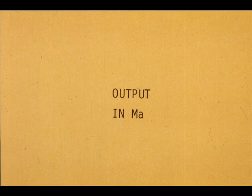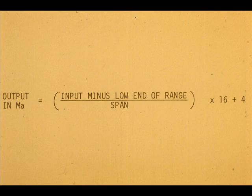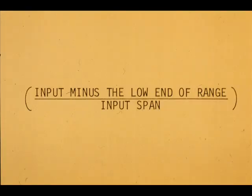For any 4 to 20 milliamp output transmitter having linear inputs, the output can be calculated from this formula. The output in milliamps equals the input minus the low end of the range, divided by the span, times 16, plus 4. This expression is simply the percent of total span represented by a given input.